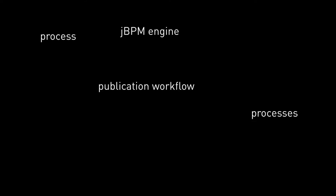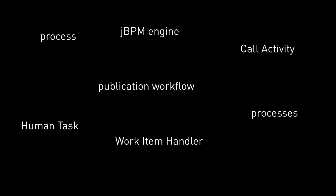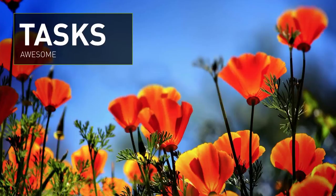To summarize what you just saw: this is Magnolia's publication workflow. It uses the JBPM engine to execute a process — in fact, several processes tied together using call activities. We have custom work item handlers involved, and human interaction is managed by JBPM's human tasks. But you can actually forget all of that for now — you didn't really see anything related to JBPM or workflows in that demo. What you saw is Magnolia's new task module and its integration into Pulse.